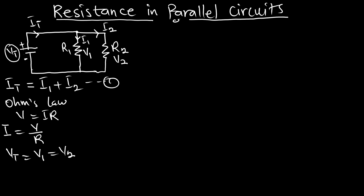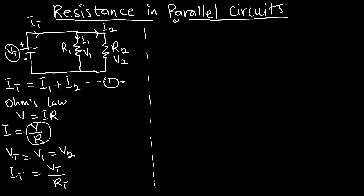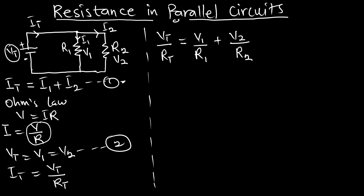From Ohm's law, IT is going to be VT on RT. So from the current equation, VT on RT is equal to I1 plus I2, where I1 is V1 over R1 and I2 is V2 over R2. Since VT, V1, and V2 are all the same, they can cancel out from this equation.